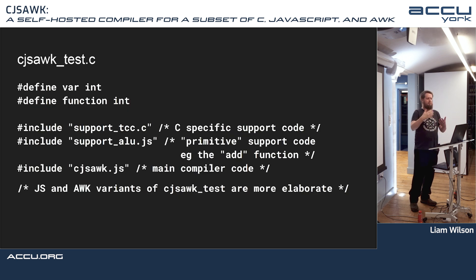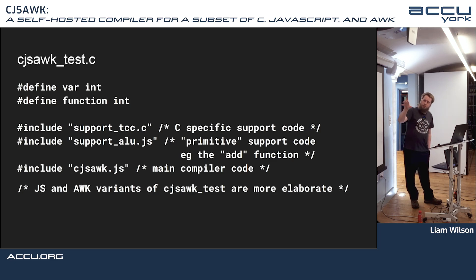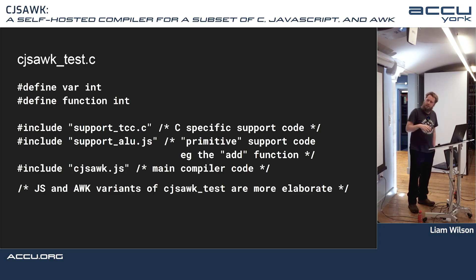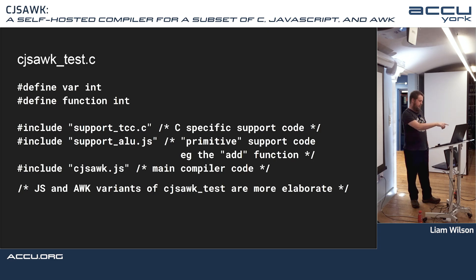A compiler essentially takes source code and turns it into assembly language. This is the support code for C: there are a couple of macro definitions — you define var to be int and function to be int — which means that when you pass JavaScript code into it, it can be compiled to C. You have to write in a subset to make it actually compile. Then you hash-include some support code, and then hash-include cjs.js, which is actually the JavaScript compiler itself.